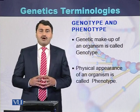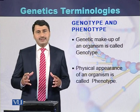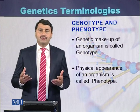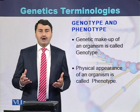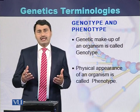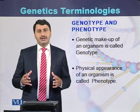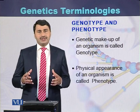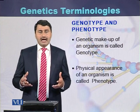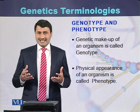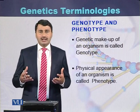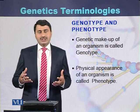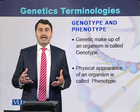What is the meaning of genotype and phenotype? Genotype is the genetic makeup of an organism, like the number of chromosomes, the number of genes, or the sequence of genes in a particular organism. While the physical appearance of an individual — like height, skin color, or eye color — is called the phenotype of that individual.